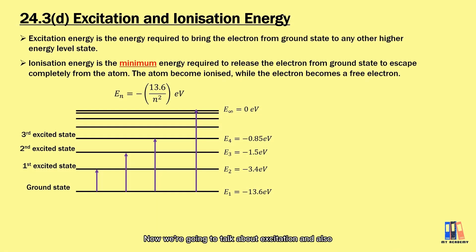Now we're going to talk about excitation and also ionization energy. Basically, excitation energy is the energy required to excite the electron to higher energy state, while the ionization energy is the energy required to ionize the atom, which is the minimum energy to free the electron from the atom. Based on the formula derived, we can roughly sketch the energy level diagram. So this is specific for hydrogen atom that the ground state has the energy level of -13.6 eV, while others can be calculated using the formula.